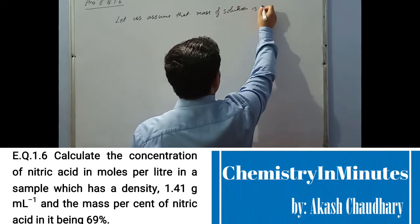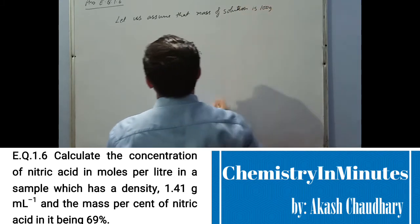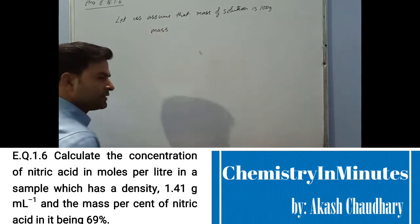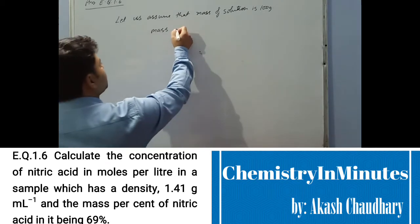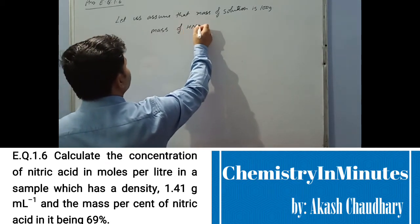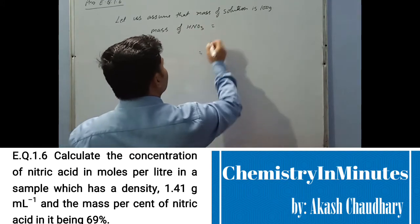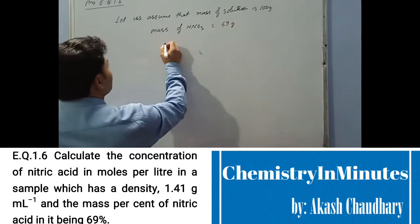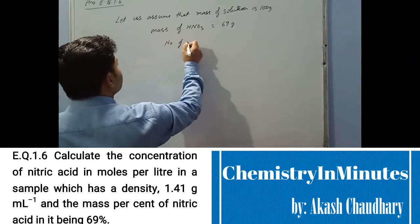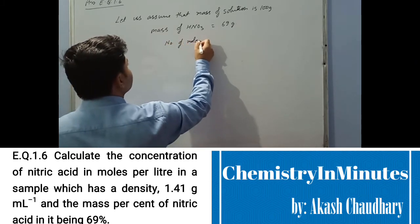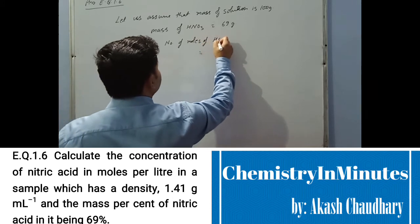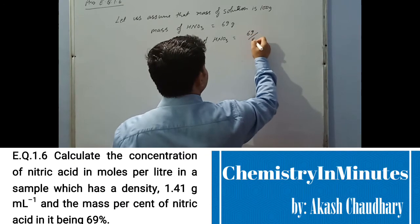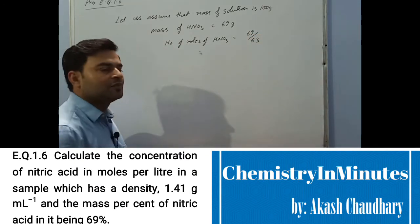Since mass percentage of nitric acid is 69%, the mass of nitric acid will be 69 grams. Now the number of moles of nitric acid will be 69 divided by 63, which is the mass of nitric acid divided by its molar mass.